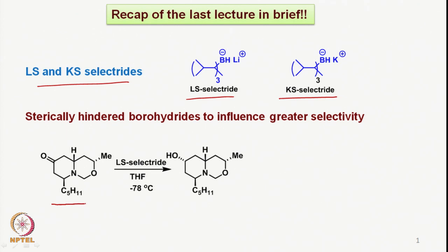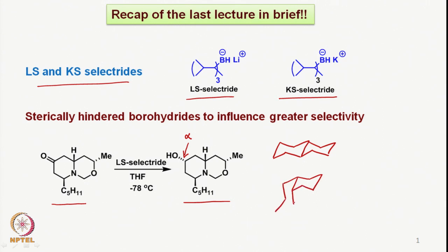This is the example we considered last time. We saw that reduction leads to the formation of this hydroxy compound where the hydroxy group comes from the beta side, and the orientation of the hydroxy group is towards the alpha side. We did not consider the trans conformation under normal circumstances; however, we considered the cis conformation and saw how steric hindrance leads to the formation of this particular molecule.